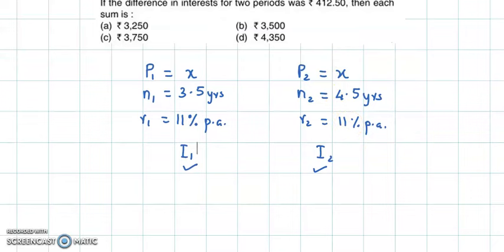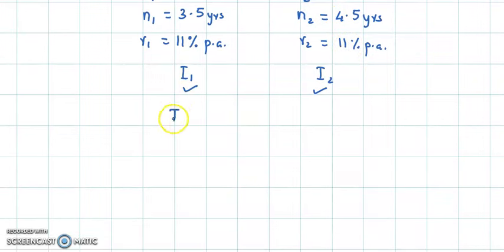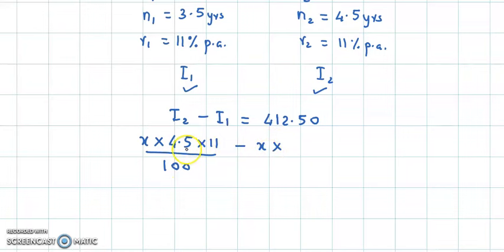Let us use that condition: I2 - I1 = 412.50. The simple interest formula is PnR/100. So for I2, we have (x × 4.5 × 11)/100, and for I1, we have (x × 3.5 × 11)/100. Therefore, (x × 4.5 × 11)/100 - (x × 3.5 × 11)/100 = 412.50.